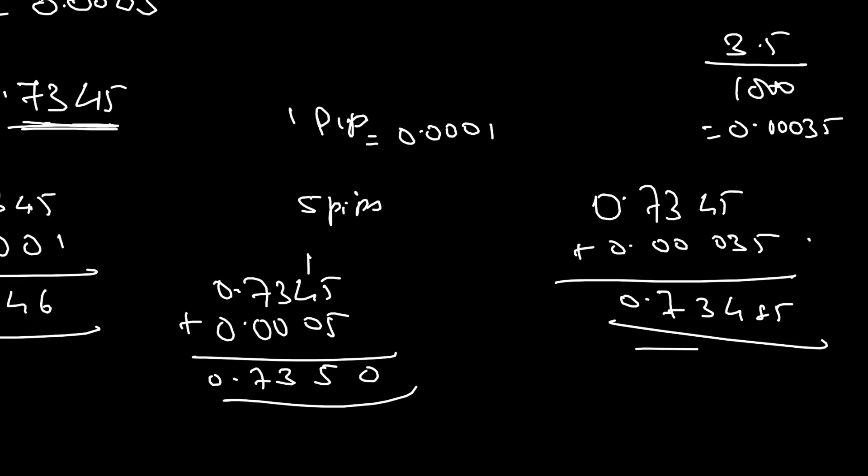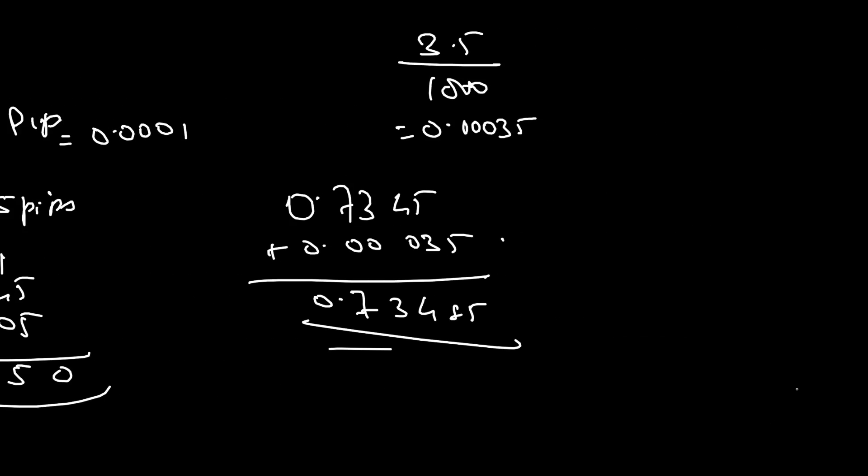Now, further, we can connect this concept to another terminology. See, 1 PIP is also called as basis. So, 1 PIP is equal to 1 basis point. In the banking world, it is termed as basis points. B-A-S-I-S, basis points.